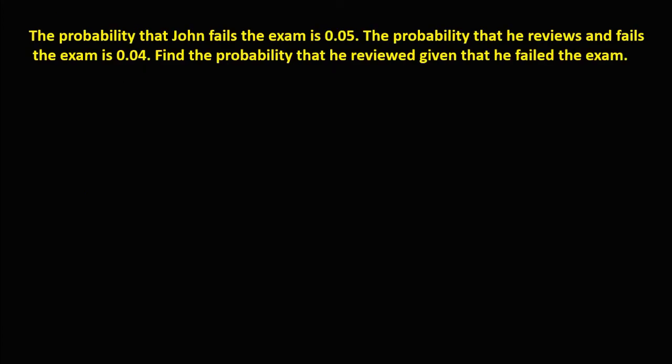For this problem, the probability that John fails the exam is 0.05. The probability that he reviews and fails the exam is 0.04. Find the probability that he reviewed given that he failed the exam.